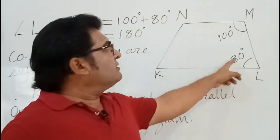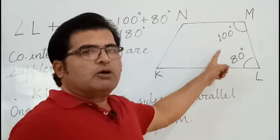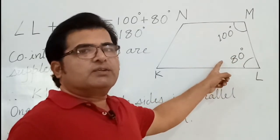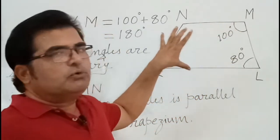They are the consecutive interior angles also. When the sum of the consecutive interior angles is 180 degrees, then the two lines have to be parallel.